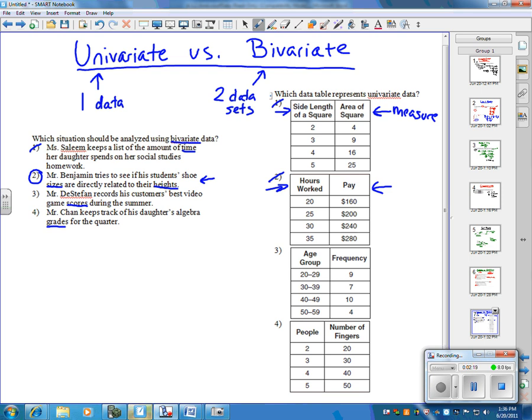Now, with people and number of fingers, you can measure people and amount, and you can measure the amount of fingers those people have. Now, the last one is three.